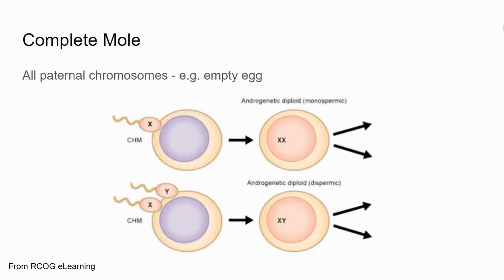For a complete mole, all of the chromosome material comes from the paternal line. You have an empty egg — an egg missing the genetic information — where either one sperm fertilises and then duplicates, or two sperm fertilise. Again, these cannot go on to develop normal healthy pregnancies.